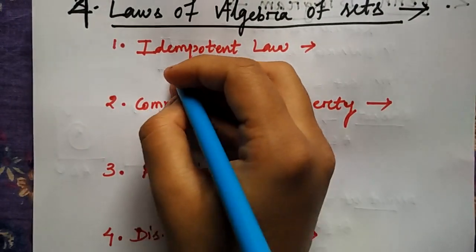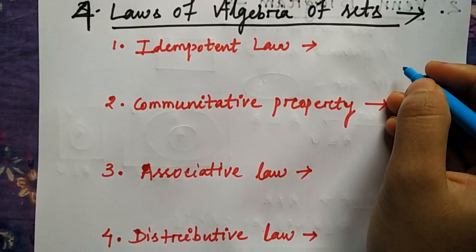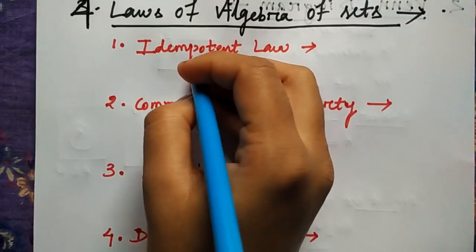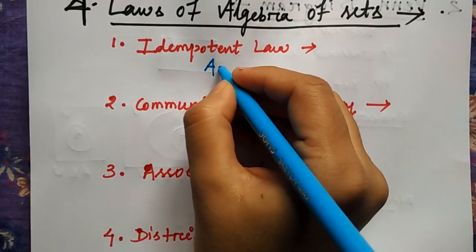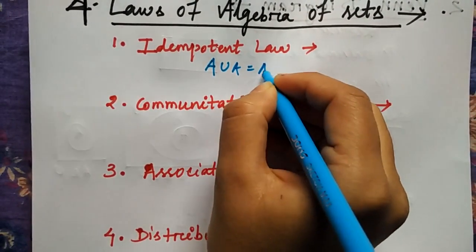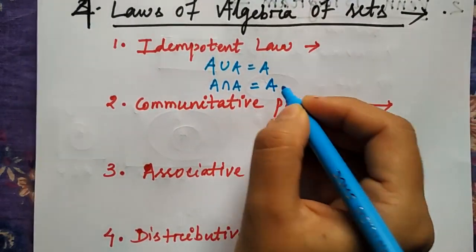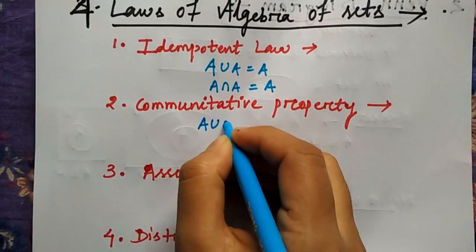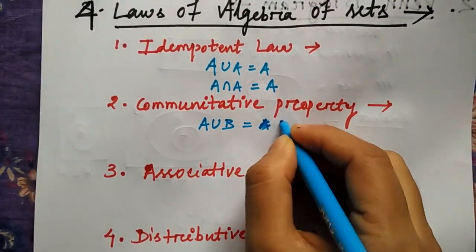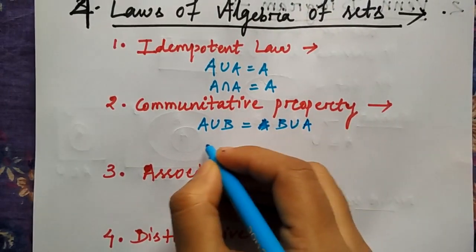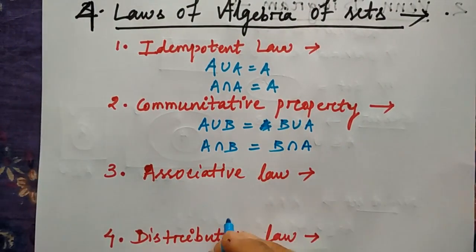The idempotent law covers both union and intersection, similar to how we have addition and multiplication. A union A will be A, because if you do any operation on the same element you get the same result. For the commutative law, A union B equals B union A, and A intersection B equals B intersection A — either way the result is the same.